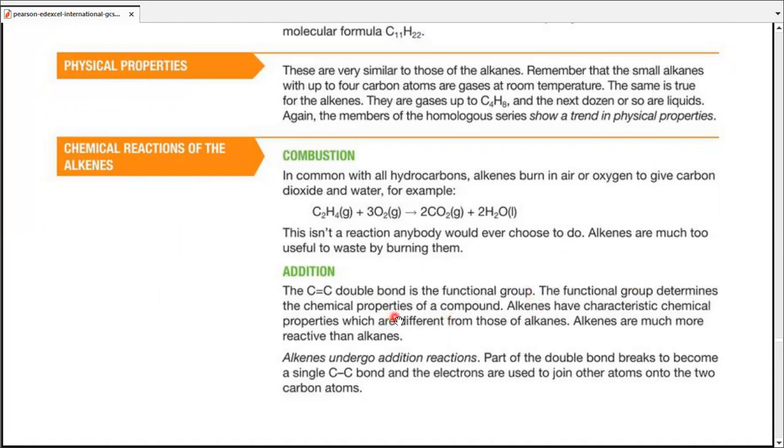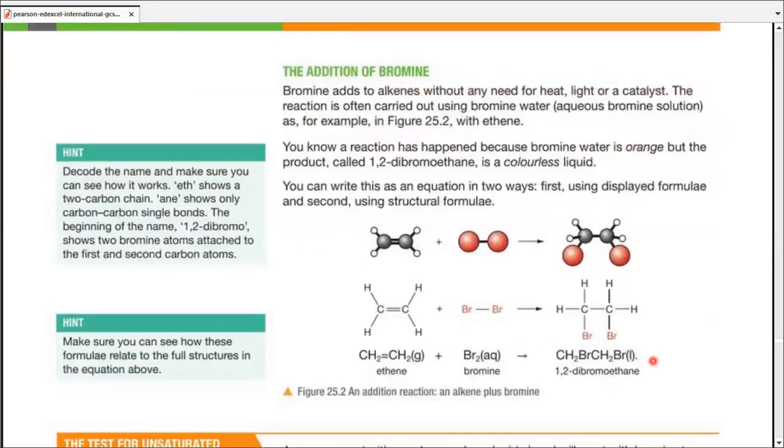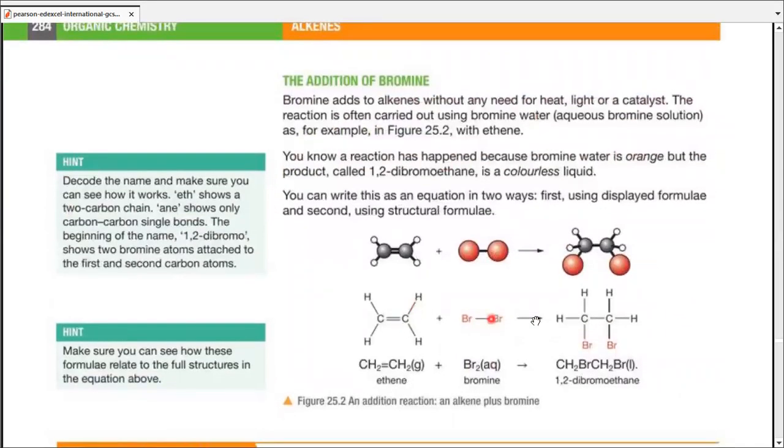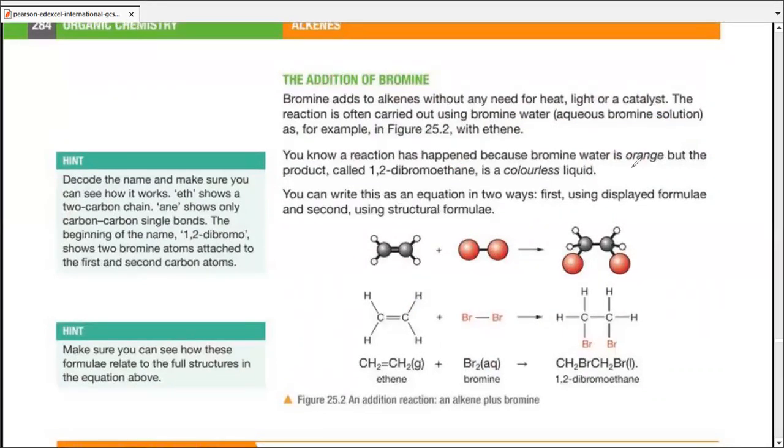Carbon-carbon double bond is the functional group. This functional group is going to decide most of the chemical properties. Now, alkenes are going to undergo addition reactions. Part of double bond breaks. It then becomes a carbon-carbon single bond. And the electrons are used to join other atoms onto carbon atoms, making covalent bonds. So let's take a look at addition of bromine. We have seen this reaction a couple of times in the previous chapter, as well as this one. They do not need any heat, light, or catalyst for this reaction. We carry out this reaction with bromine water, aqueous bromine solution, which actually has an orange-brown appearance, as written over here.